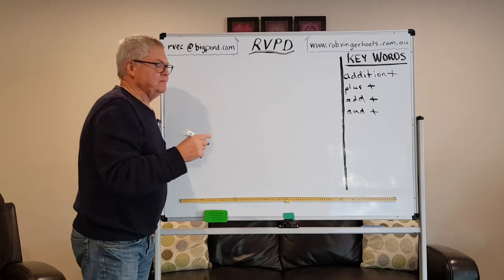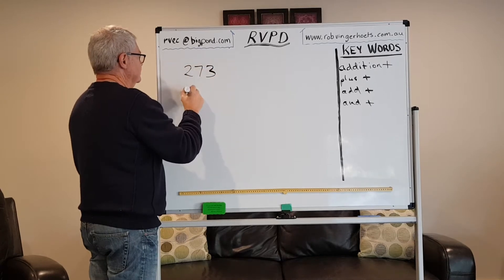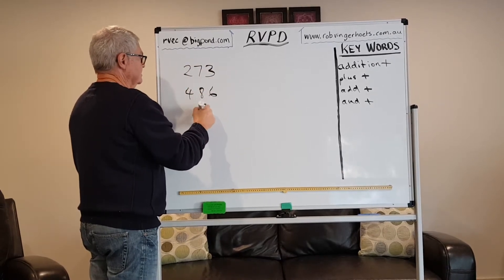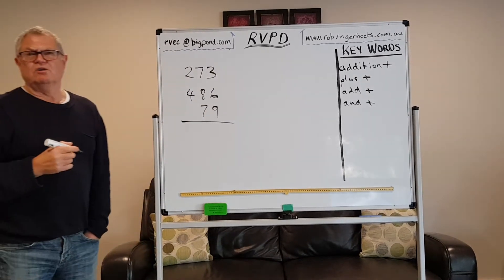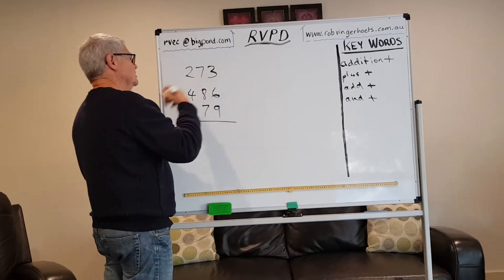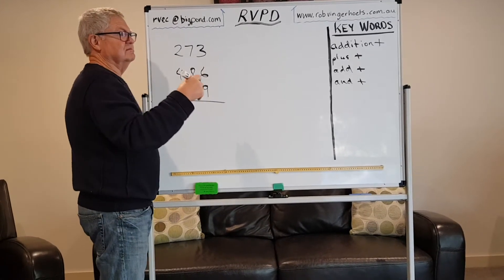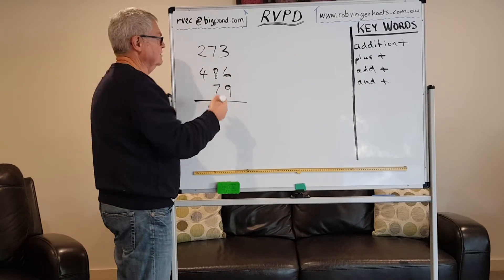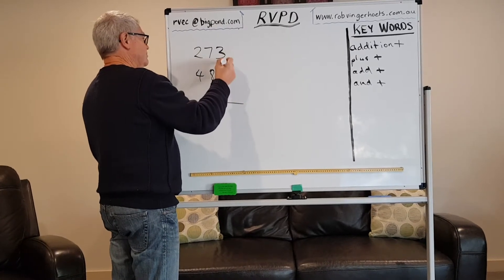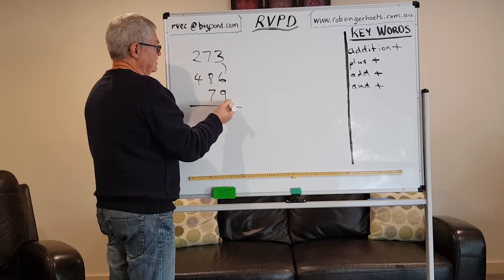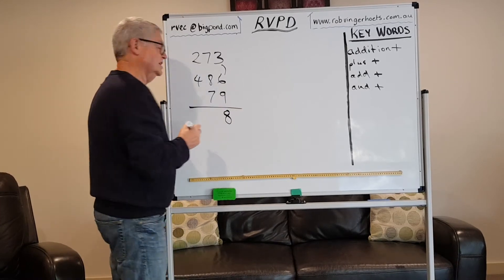This is traditionally how we've gone about addition. We've got some numbers and some more numbers — 273, 486, and 79 — and we've been told to add them up. You start on the right-hand side, even though it really doesn't make any difference whether you start left or right — after all, seven plus nine equals nine plus seven. We've got three and six is nine, plus another nine, that's a double, so we have 18.